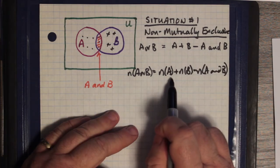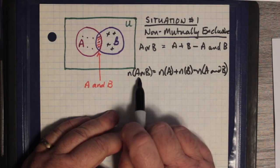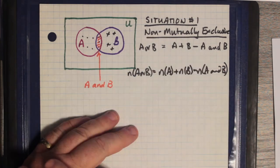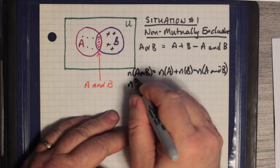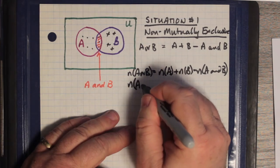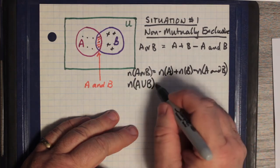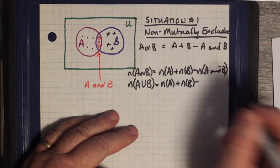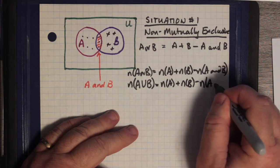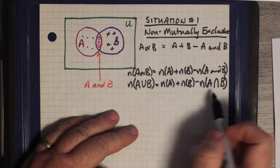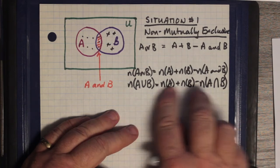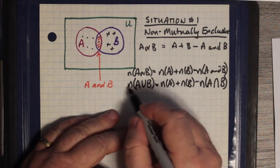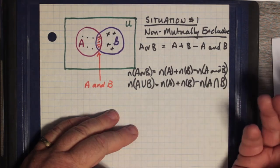In terms of counting, we often use the notation N, at least in the textbook. N of A or B just follows the same formula. That's N of A plus N of B minus N of A and B. N of A or B is the number of elements in A or B, in other words, the number of elements in both sets taken as the union of A and B. We can also, of course, use set notation.